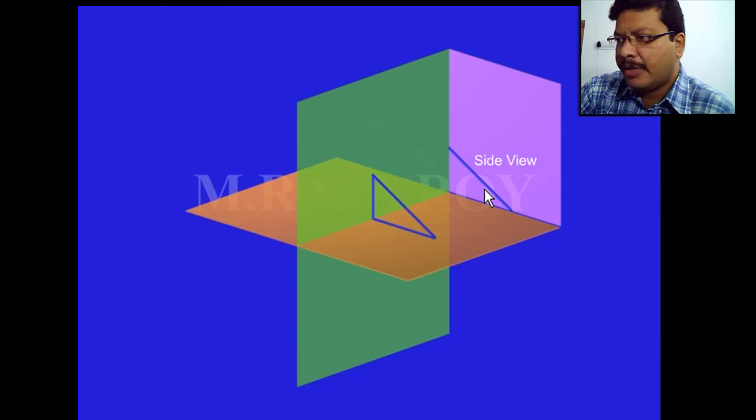Now in the side view you can obtain the true length. You can't get the true length either in the front view or in the top view. But in this case when theta plus phi equal to 90, you can get the true length in the side view.